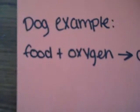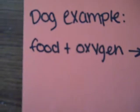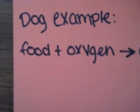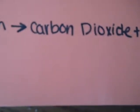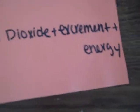In the dog example, a dog treat and oxygen will be the input, and the output will be carbon dioxide, excrement, and energy.